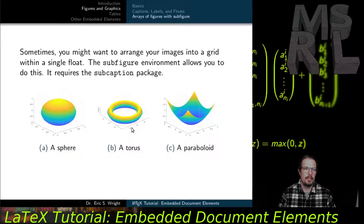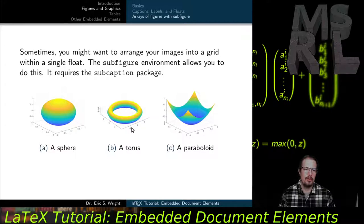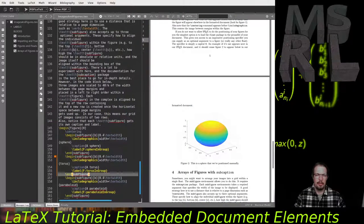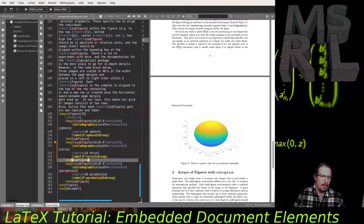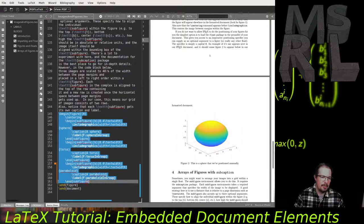Sometimes you want to arrange several images into a grid encapsulated within a single float. The subfigure environment allows this, and it requires loading the subcaption package. With subcaption loaded, you can create complexes of images, each with their own captions, all treated as one big figure with several sub-figures. Let's go back to the editor to see how sub-figures work.